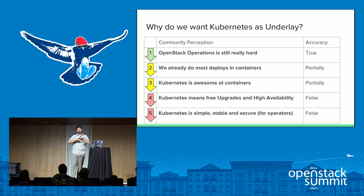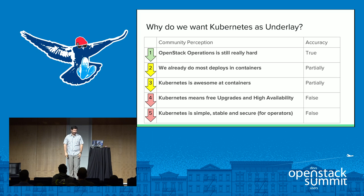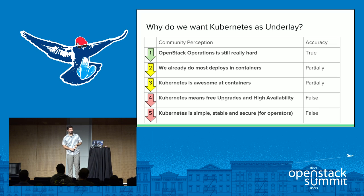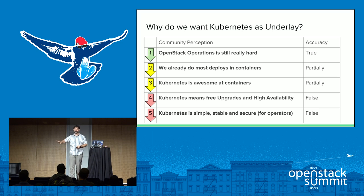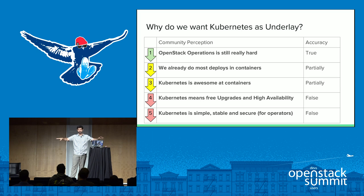And now we're getting gradually towards the less accurate statements: Kubernetes means I get free upgrades and availability — my rainbows and unicorns — and that Kubernetes is simple, secure, and stable for operators. Ignore the three-month release cycle and the fact that you're using Docker under the covers, perfectly ready to go.